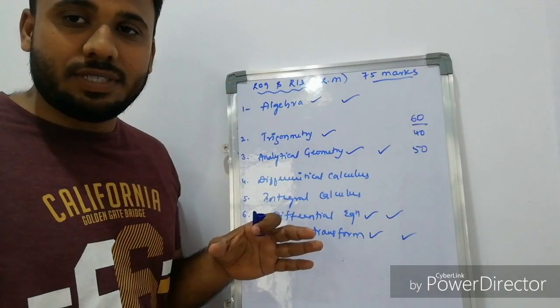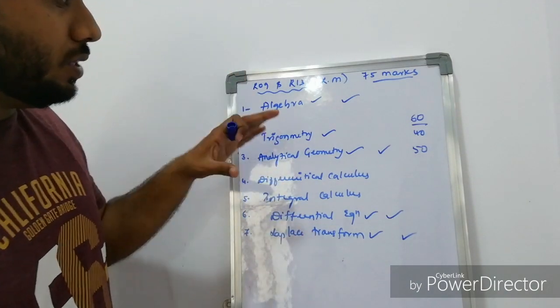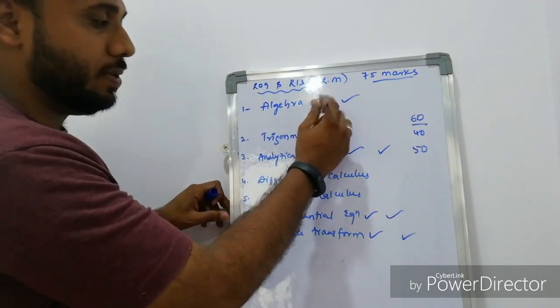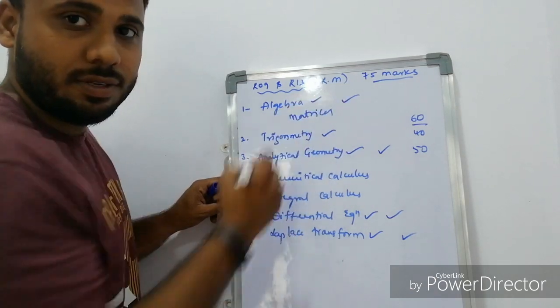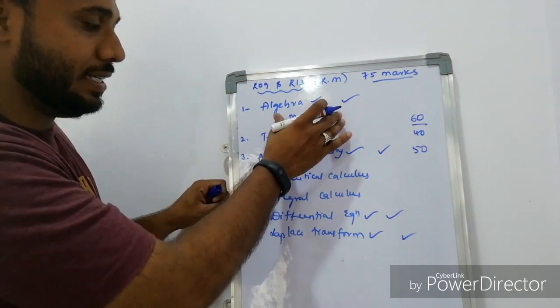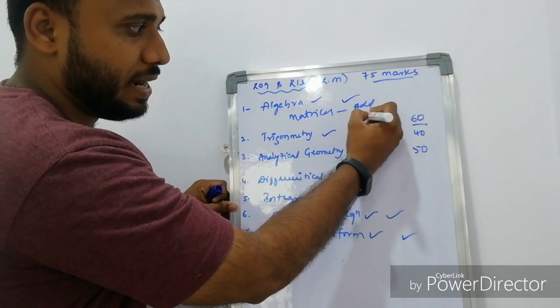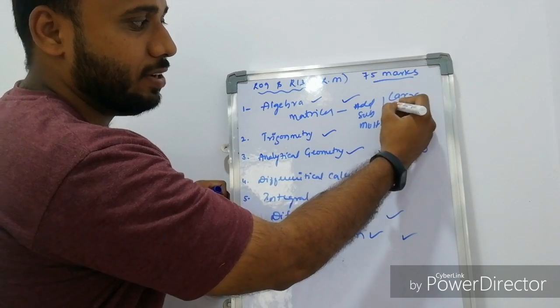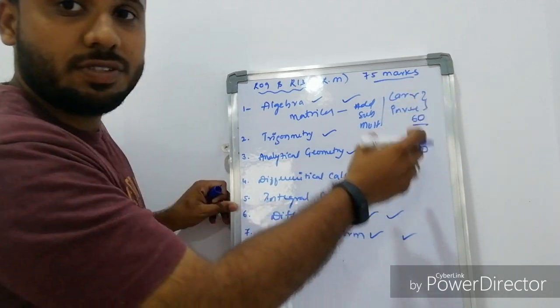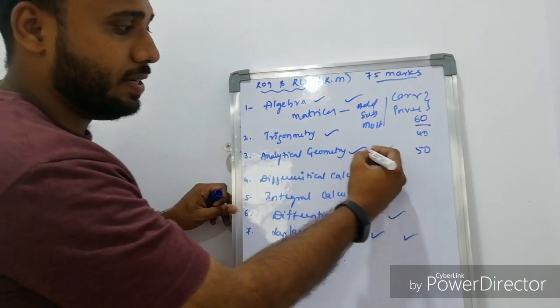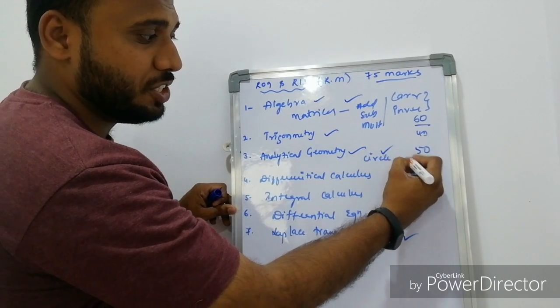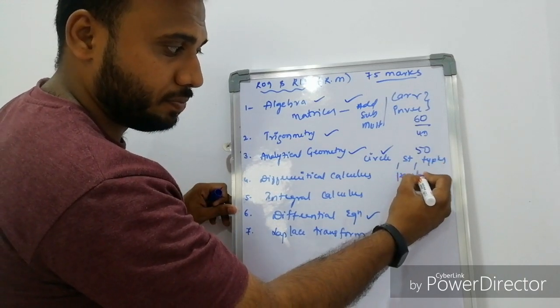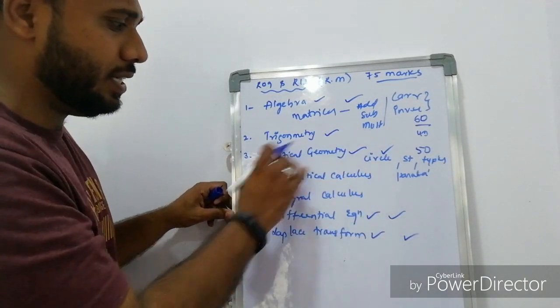If you want to score good marks in the subject, then minimum you have to cover 5 units. First one is algebraic. In algebraic, you have to cover matrices perfectly, without any doubt. In matrices, addition, subtraction, multiplication, Cramers and inverse method. These are the two methods which are most important. In analytical geometry, circles, straight lines, types of straight lines, parabola. These are the main topics.